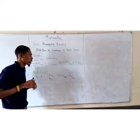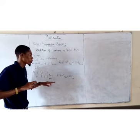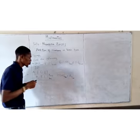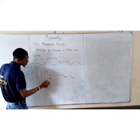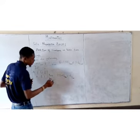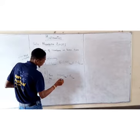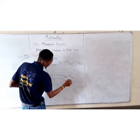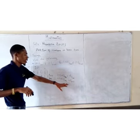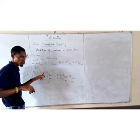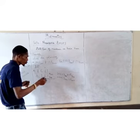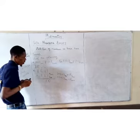Now, if you look at the chart from the previous episode, 2 in base 10 is equal to 10 in base 2. So when you see 1 plus 1 in base 2, it simply gives us 10. So you write 0, carrying 1 into the next column. Also, 1 plus 1 plus 1 is equal to 3 in base 10, and 3 in base 10 is worth 11 in base 2. So you write down 1, carry 1.